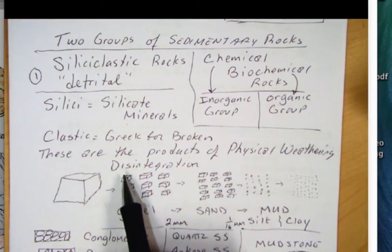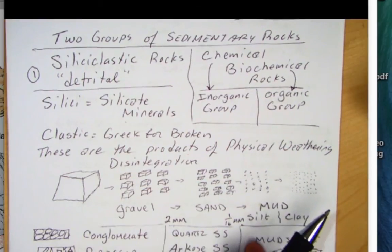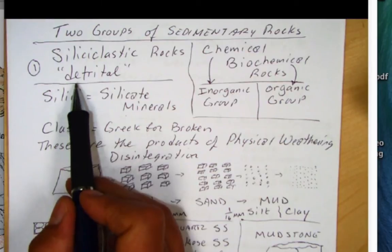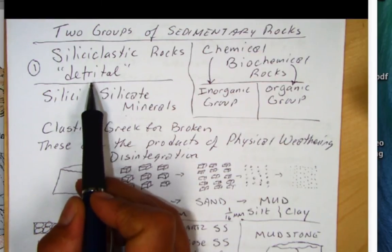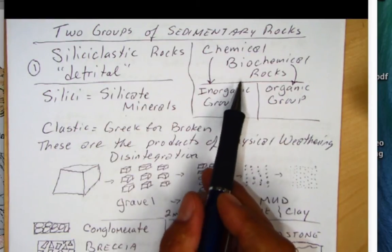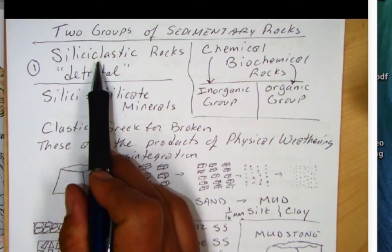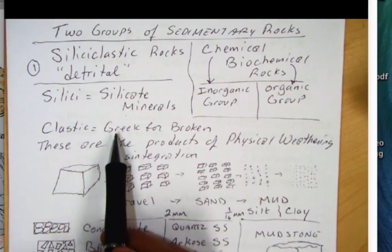But let's go back to this silicyclastic group. I think your book calls it detrital. But the problem with that is a lot of these chemical rocks can also be detrital. So I like to use silicyclastic because it really refers to these silicate minerals that are broken.